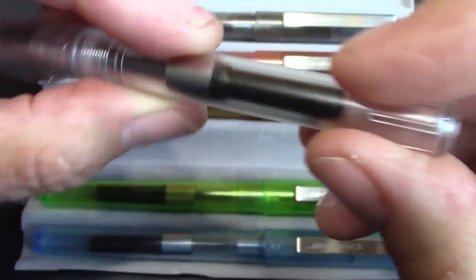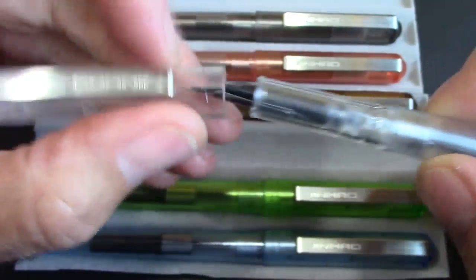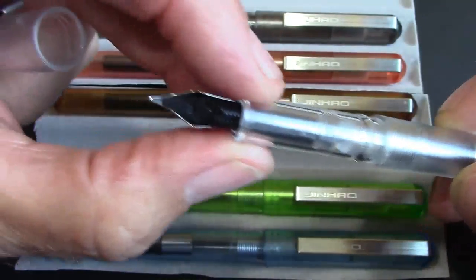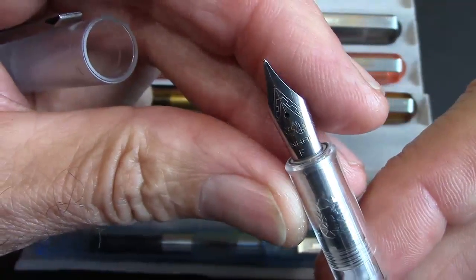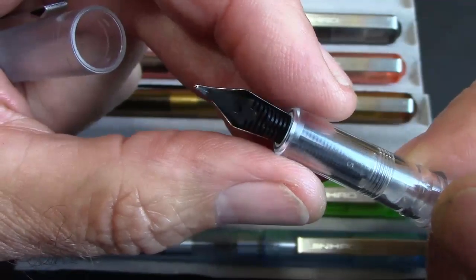It looks like this is one piece, the barrel. It's a pull-off cap, which again makes it easy. Again, you see a clear section, but not a clear feed. This is, to me, the classic Jinhao nib, which has been around for a number of years. Not the newer one that's in the 992, at least from my perspective.